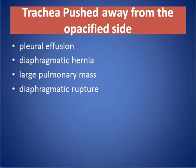The trachea is pushed away from the opacified side, like in pleural effusion, diaphragmatic hernia, large pulmonary mass, and diaphragmatic rupture.